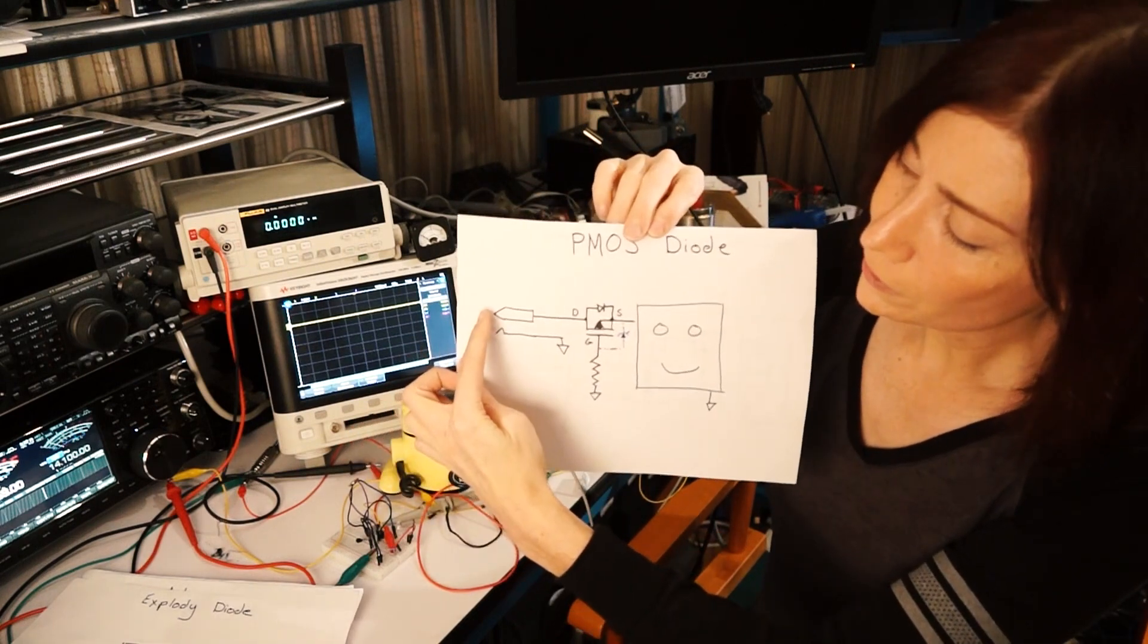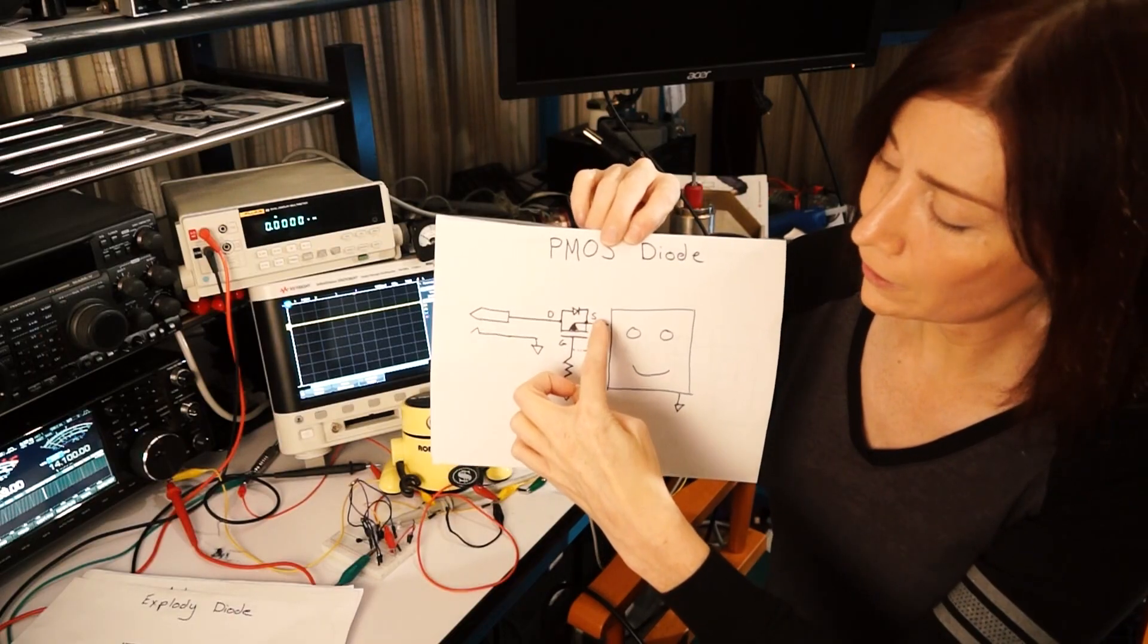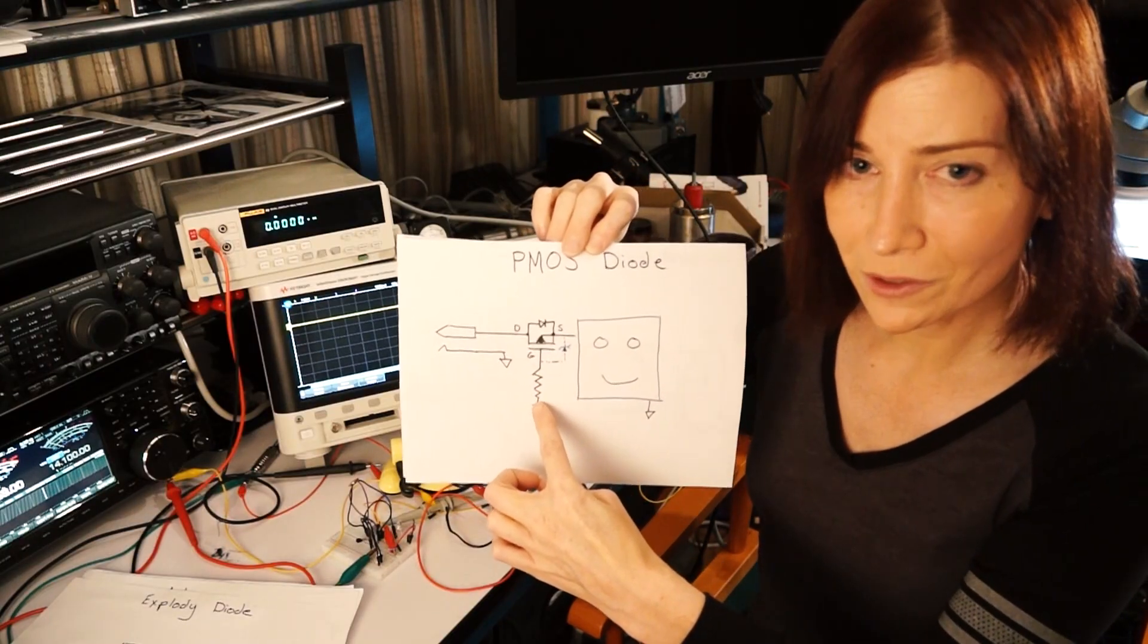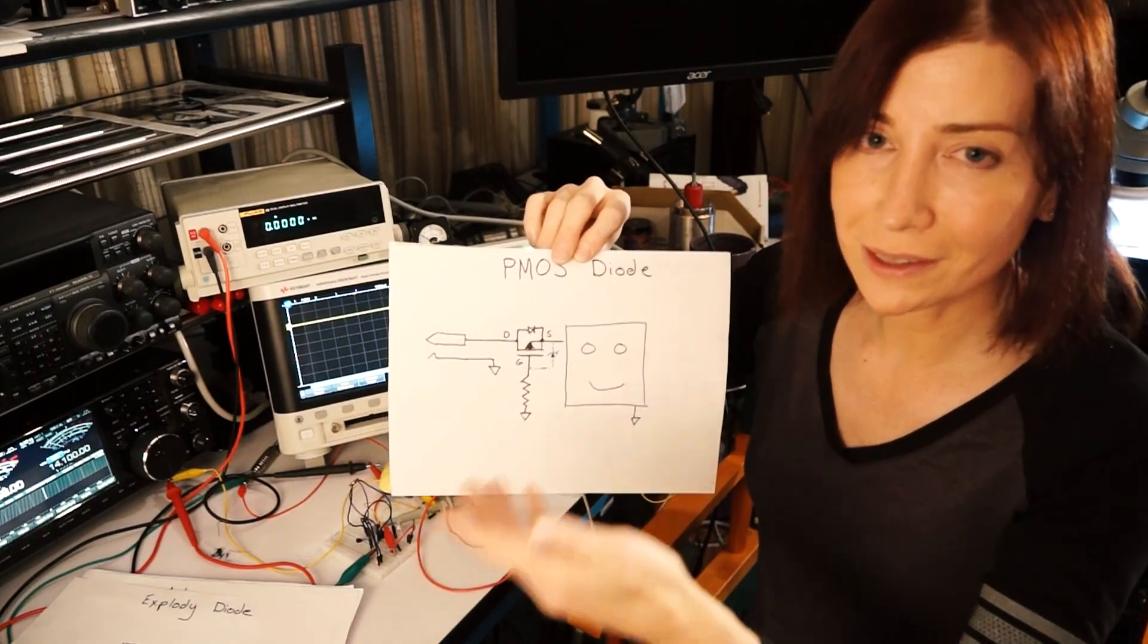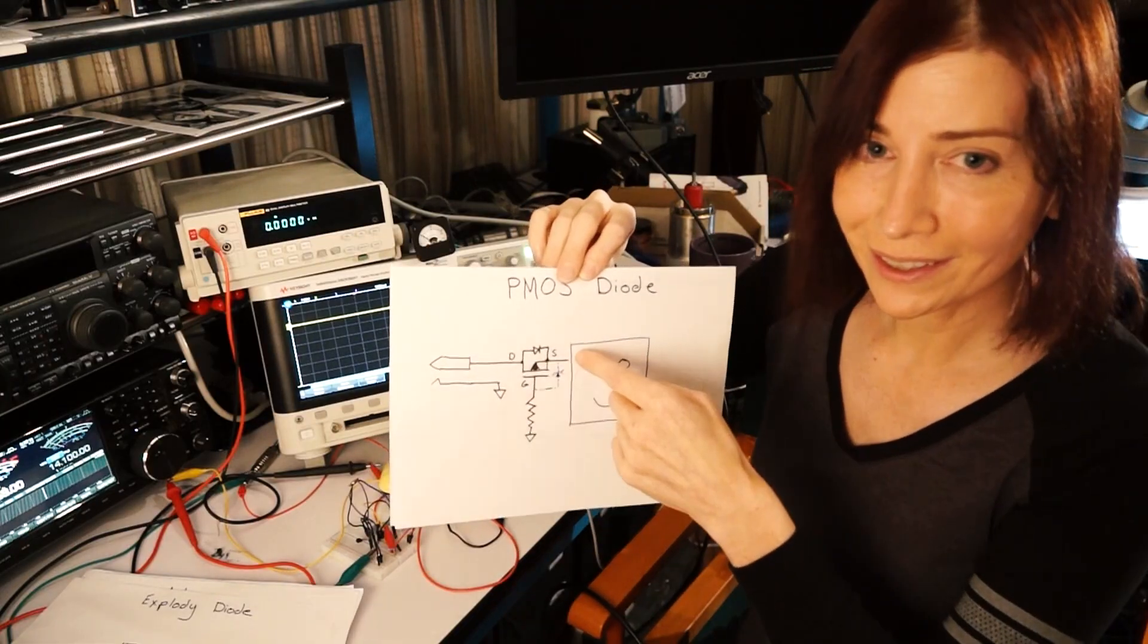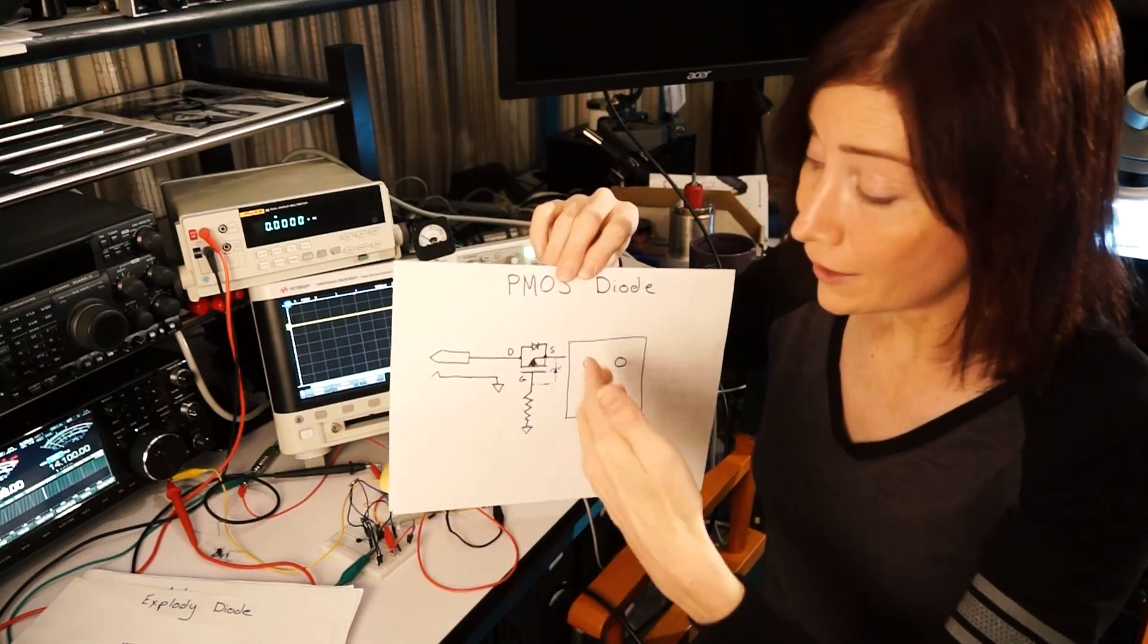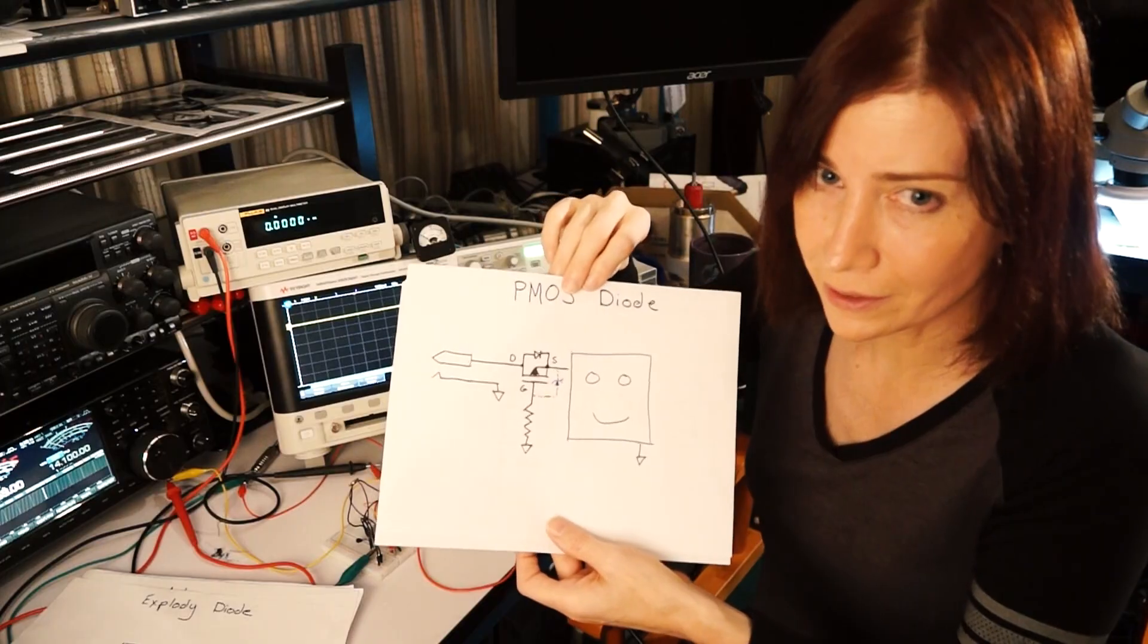And so the way this works is on your positive supply rail, it goes into the diode, the voltage flows through the body diode, and then your source starts to rise. And when your source rises, it goes negative relative... I mean, your gate goes negative relative to the source, which turns on the transistor. And these PMOS transistors are amazingly low resistance these days. So it's almost like having nothing in line. And if you flip the polarity backwards, now your gate is higher than the source, and the transistor will never turn on, and so your device is protected. These particular transistors are just pennies these days.